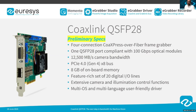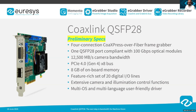The board has a set of 20 digital I/O lines to interface with the inspection machine, extensive camera and illumination control functions, and a user-friendly driver for multi-OS and multi-language support. The Coaxlink QSFP28 provides 2.5 times more bandwidth than the previous version, the QSFP+.